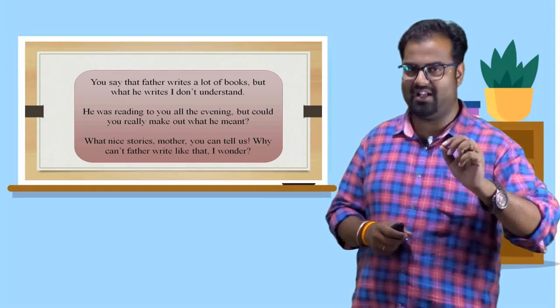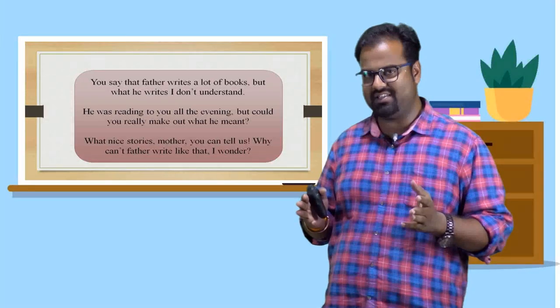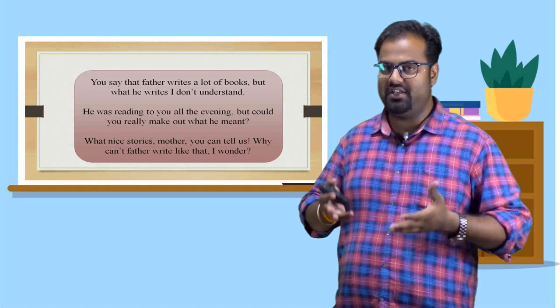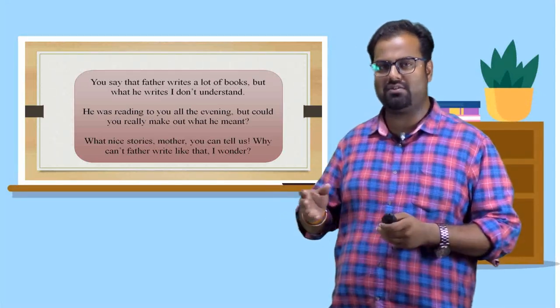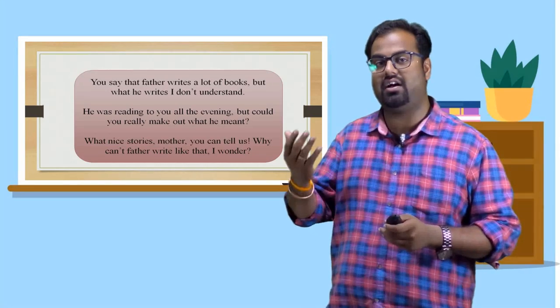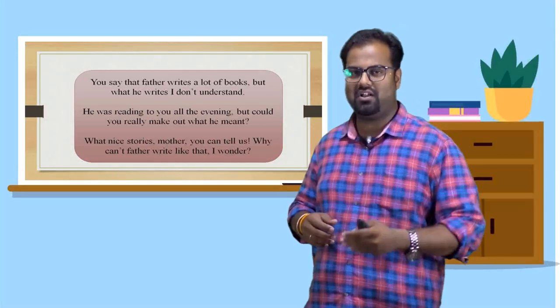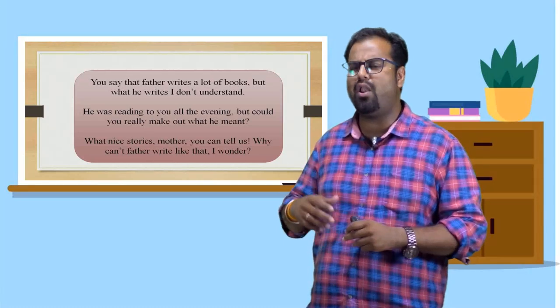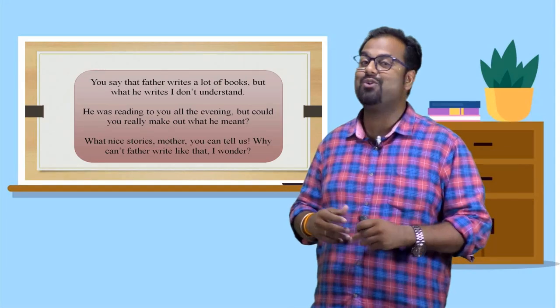People do lot of different jobs, occupations. Farmers, drivers, police, teachers, engineers, doctors. And the same way, few of the individuals, few of the people, their job, their profession is to write and earn their livelihood. In this poem, the child's father is a writer. And that's why he is telling, you say that father writes a lot of books. But what he writes, I don't understand. So you don't have to understand. Because grown-ups write different kind of things. You may not be able to understand. But the child is also not able to understand what his father writes about.